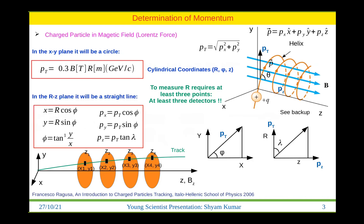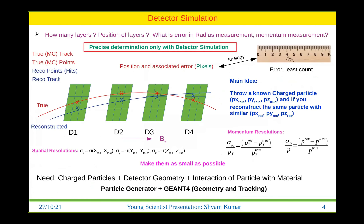If you have only two points you get a straight line fit and no curvature. To measure the radius we need at least three points, so we need at least three detectors to reconstruct the track trajectory. The questions are: how many layers are required, what is the position of layers, and what is the error in radius or momentum measurement? We can determine this precisely using detector simulation.